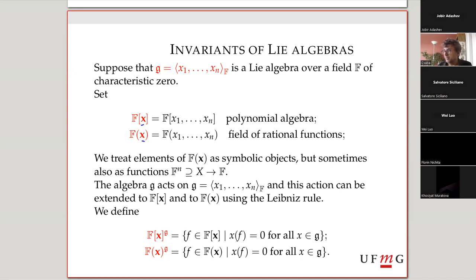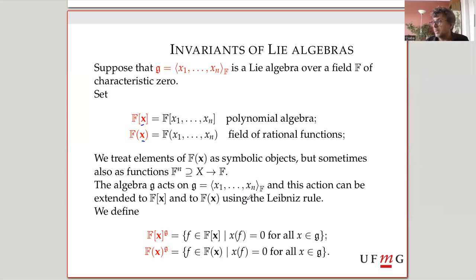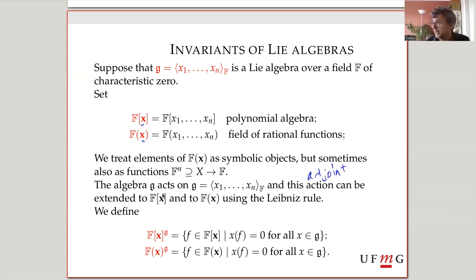I usually treat these as symbolic objects like polynomials and rational expressions, but sometimes also as actual functions from F^n to F, or in the case of rational functions from some subset of F^n to F, where the subset is chosen so the denominator is nonzero. The Lie algebra acts on this vector space via the adjoint action, and this action can be extended to polynomials and rational functions using the Leibniz rule.